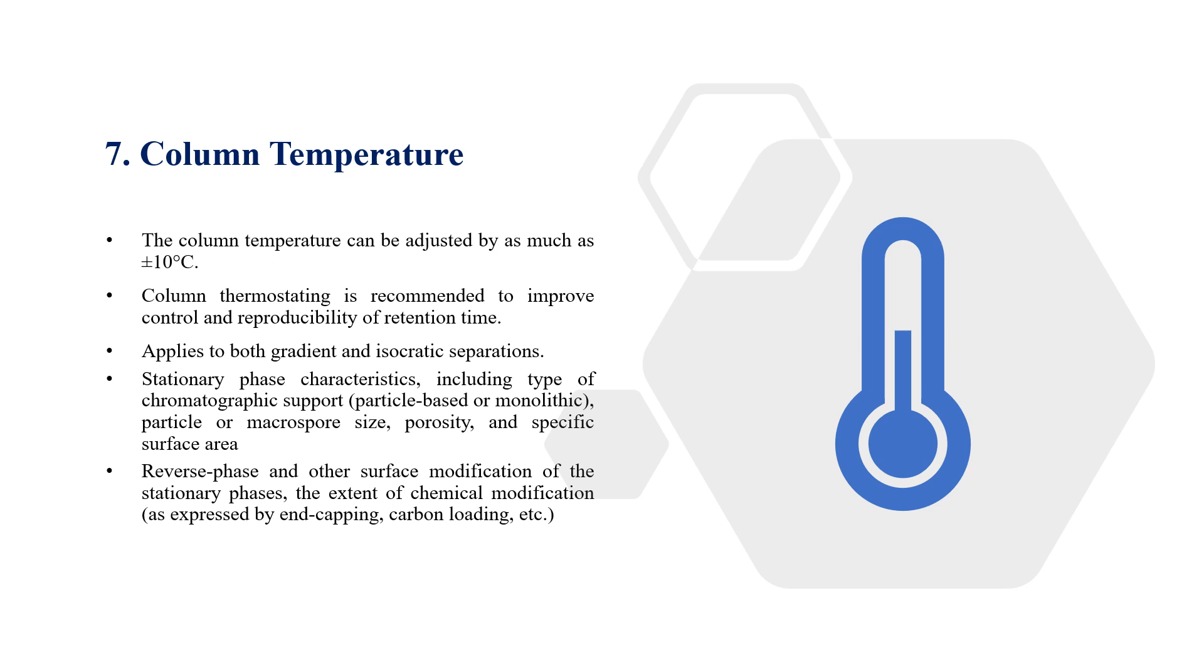So it's necessary that when you're using the HPLC, your column oven has a thermostat that can control the temperature. And the temperatures could be adjusted to plus or minus 10 degrees Celsius. And it applies to both the gradient and isocratic separations.